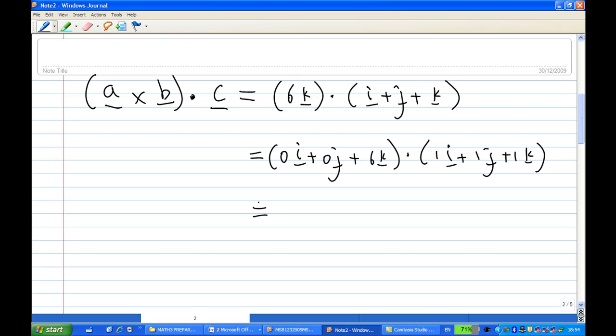And when you do the dot product, you can multiply by component of i, 0 times 1, I get 0. And then component of j multiplied by 0 times 1, I also get 0 again.